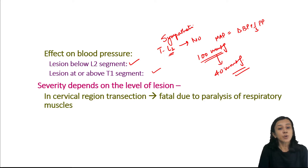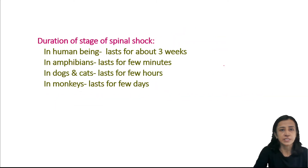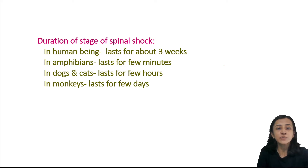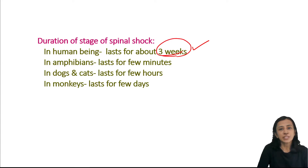Because of paralysis and decreased movement, circulation is affected, resulting in dry, scaly skin, and sometimes bed sores appear. The severity of these effects depends on the level of the lesion, as already discussed. The duration of the stage of spinal shock depends on the degree of encephalization. The duration is longest in humans — about three weeks.